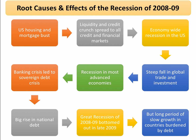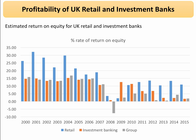Many countries have struggled to grow as fast as they did before the bubble burst. So this, I hope, gives you an idea of systemic risk. Essentially, the subprime mortgage market in the States went bust and that had a huge wider effect — not just in the United States, but also across many countries in the developed, advanced world and, of course, emerging countries as well. We can see some of the impact of this on the rate of return — the profitability — of UK commercial and investment banks.